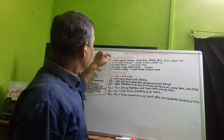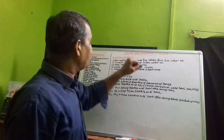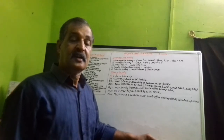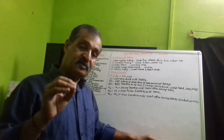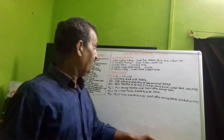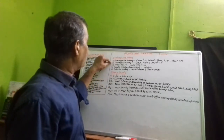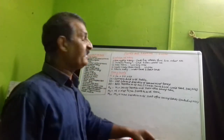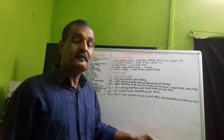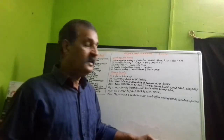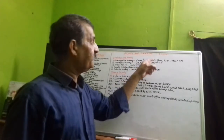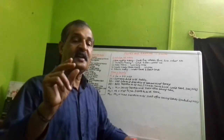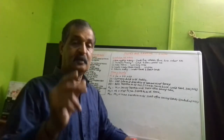लेकिन उसके बाद इन सारी चीज़ों को carry करना मुश्किल होता था। इन shortcomings को avoid करने के लिए एक दूसरा form of money आया — that is metallic money. Metallic money में gold, silver, copper etc. इन सारी forms में money होते थे।